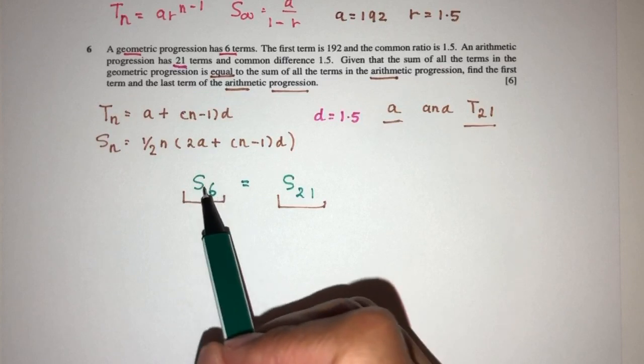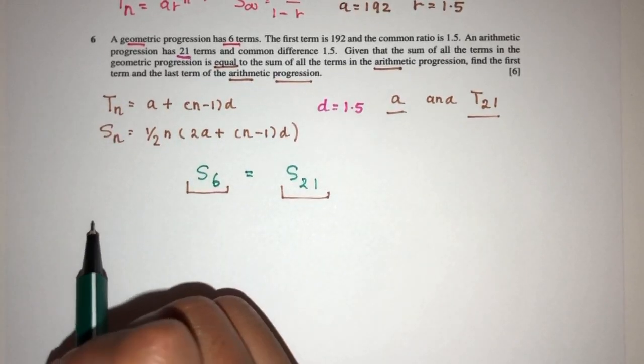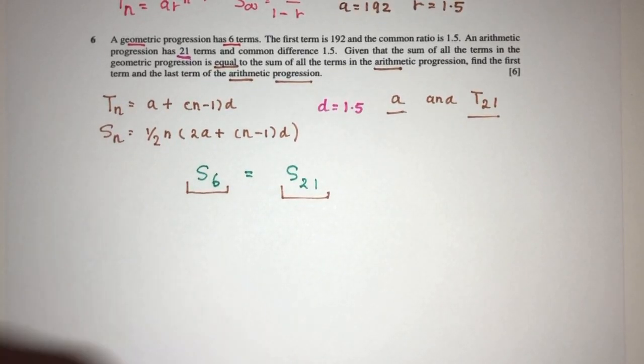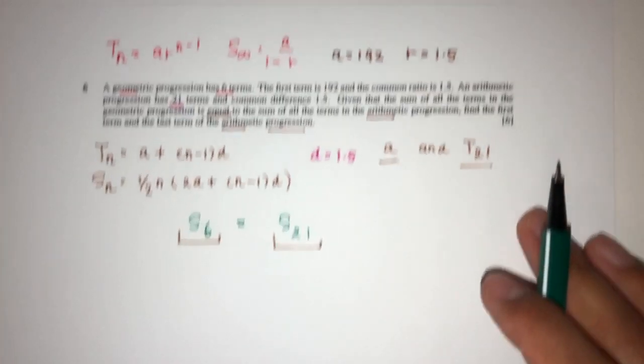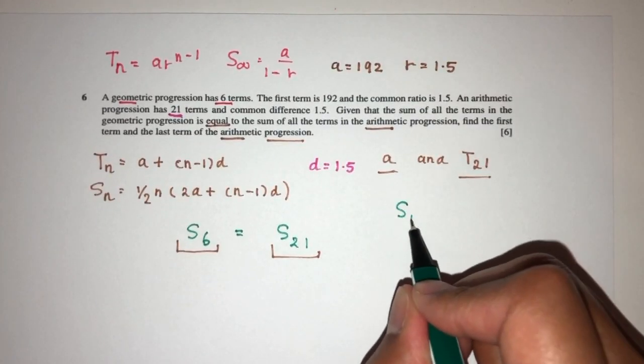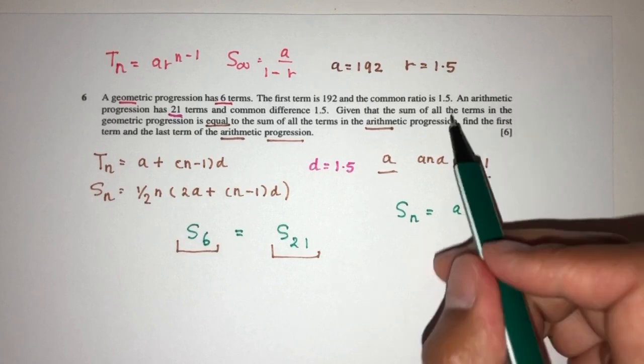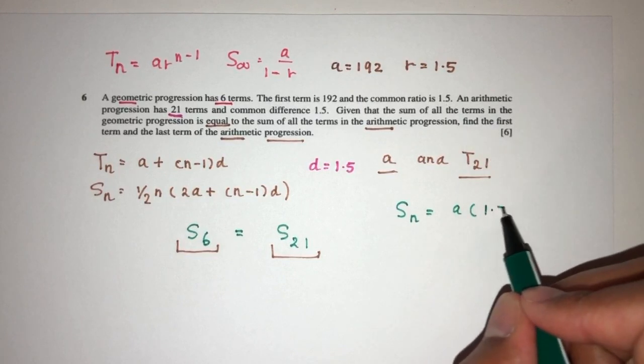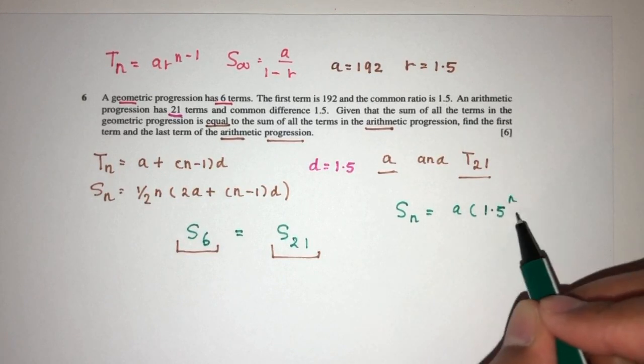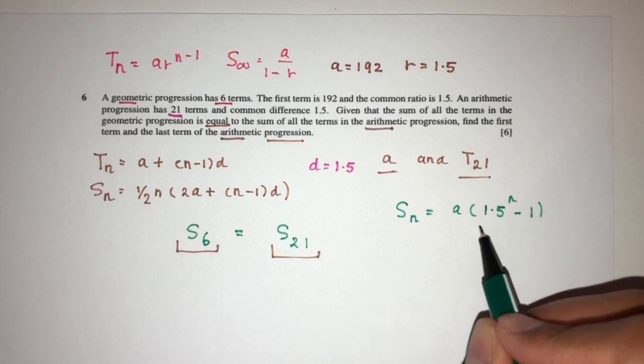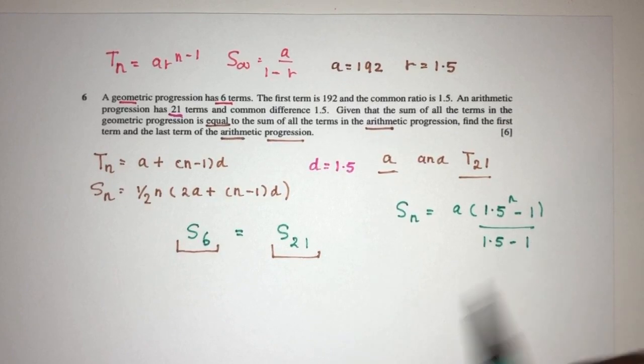We have sum of the first 6 terms. We have to know this formula. Again, this is given to you for geometric. Sum of the first n terms for geometric is a. Here we have r is more than 1, so we can put r here. That will be r to the power n minus 1 over 1.5 minus 1.